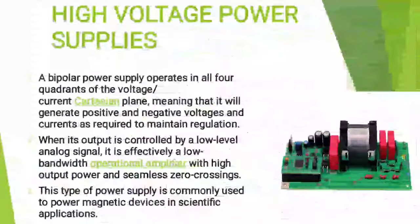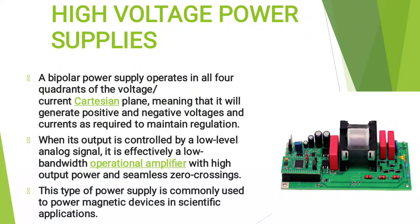A bipolar power supply operates in all four quadrants of the voltage-current Cartesian plane, meaning that it will generate positive and negative voltages and currents as required to maintain regulation. When its output is controlled by a low-level analog signal, it effectively acts as a low-bandwidth operational amplifier with high output power and seamless zero crossings.